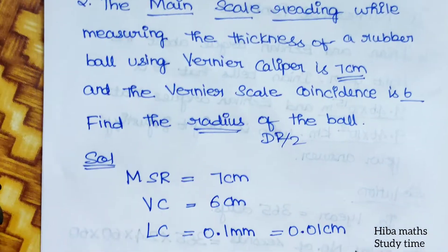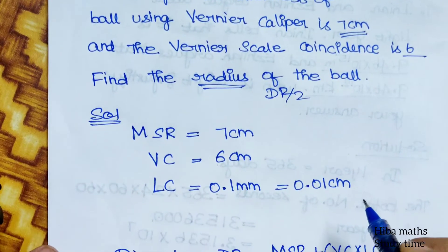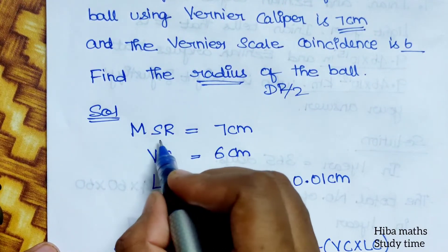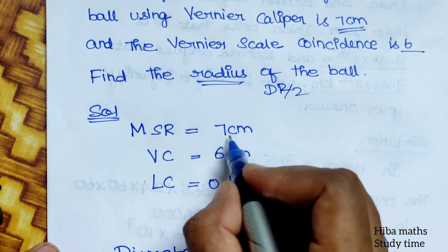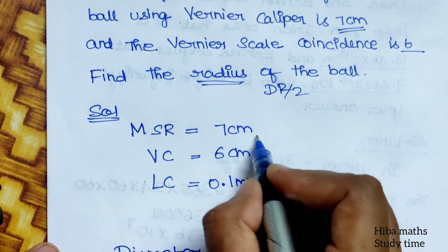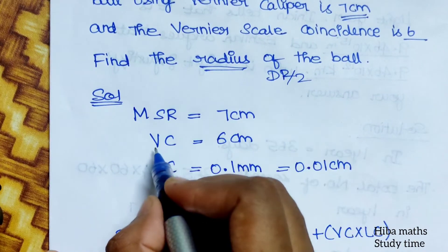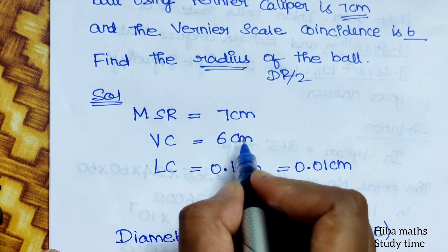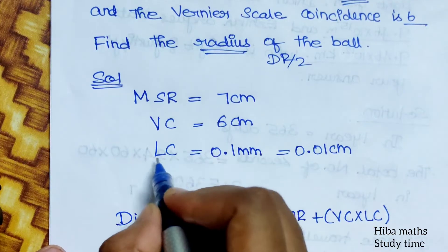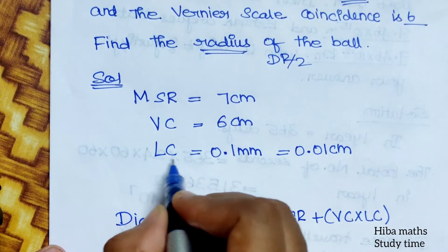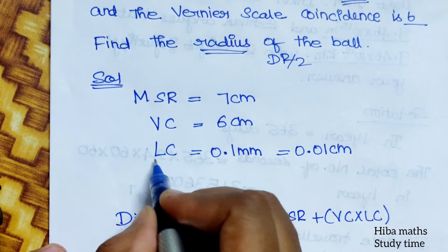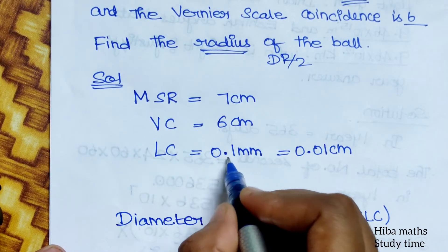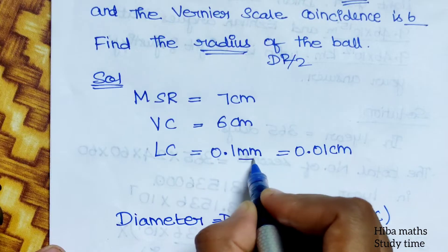You can see the solution. Main scale reading MSR is 7 cm, and VCU is 6. LC, the least count, is equal to 0.1 mm.